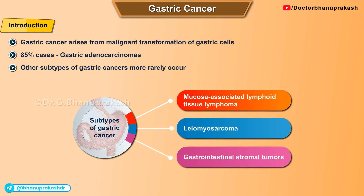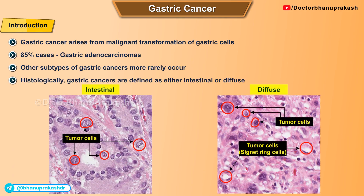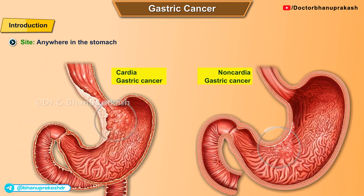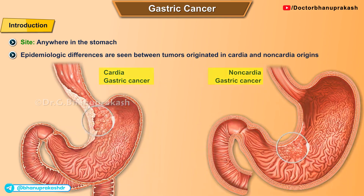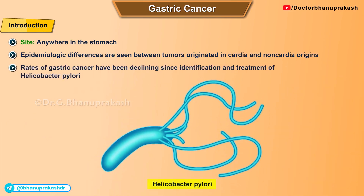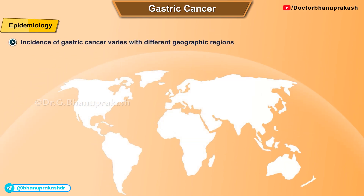Other subtypes include leiomyosarcoma and gastrointestinal stromal tumors. Histologically, gastric cancers are defined as either intestinal or diffuse. Although gastric cancers can occur anywhere in the stomach, there are epidemiologic differences between tumors that originate in the cardia and tumors with non-cardia origins. The rates of gastric cancer have been declining since the identification and treatment of Helicobacter pylori.